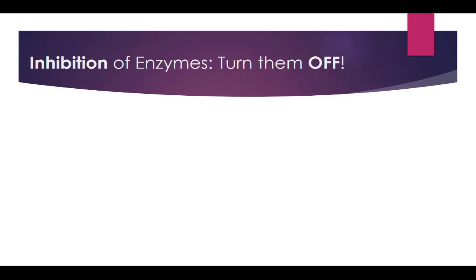Continuing on with enzymes. Once we get enzymes of the proper shape and they can go and do their thing, we need to make sure that we can control whether or not they're active or inactive, because we always want digestive enzymes in our stomach so that whenever we get food, we know they're always there to start breaking it down, but we don't always want them working. We need to be able to turn them off and moderate their activities. There are two different ways we can do that.